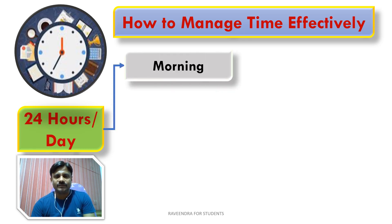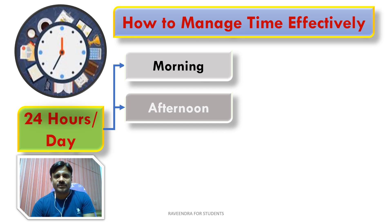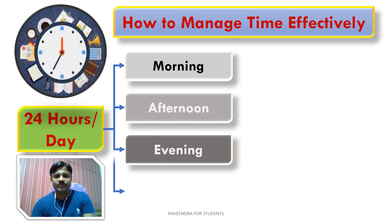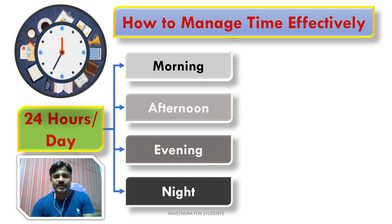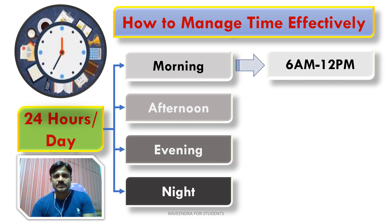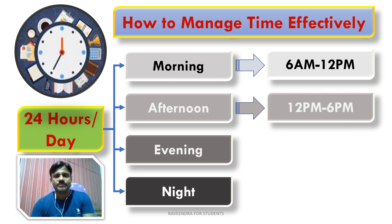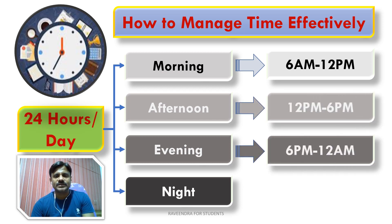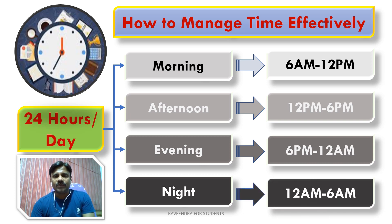The first slot is morning, the second is afternoon, the third is evening, and the last one is night. We can also combine evening and night as a single slot if required. Morning is 6 a.m. to 12 p.m., afternoon is 12 p.m. to 6 p.m., evening is 6 p.m. to 12 a.m., and night is 12 a.m. to 6 a.m.